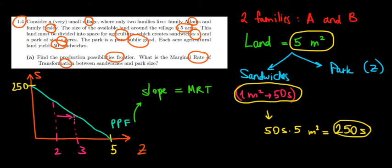Because if we use one meter square for the park we are not using that same meter square to produce sandwiches, so we give up sandwiches. How much do we give up? We give up 50 sandwiches because one meter square is yielding us 50 sandwiches. In other words, the marginal rate of transformation here is showing us the opportunity cost. One extra meter square means giving up 50 sandwiches, so the marginal rate of transformation is gonna be equal to 50.